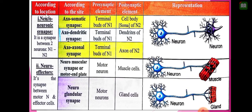There are several types of neuron-to-neuron synapses. It could be axo-somatic synapse — a synapse between the axon of the first neuron and the soma of the other neuron. It could be axo-dendritic synapse — between the axon and the dendrite of the second neuron. It could also be axo-axonal synapse — between the axon of the first neuron and the axon of the second neuron.